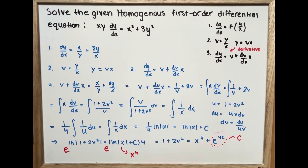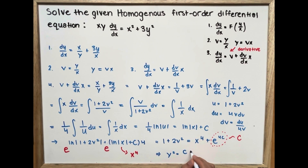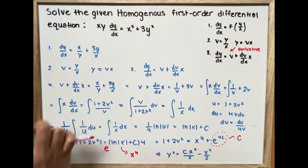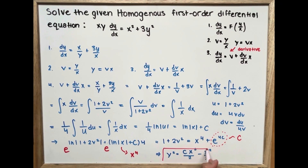Finally, we rewrite in terms of y by substituting v back as y over x. This gives y squared equals cx to the power of 6 over 2 minus x squared over 2. This is our final answer.